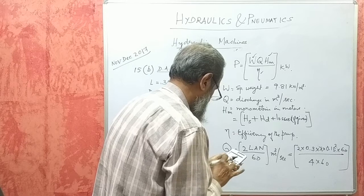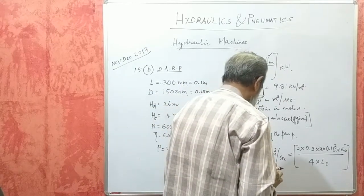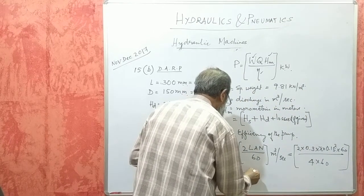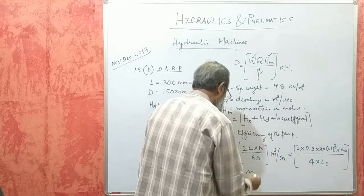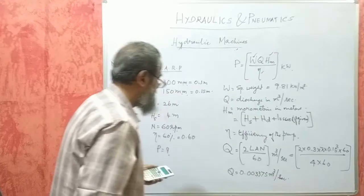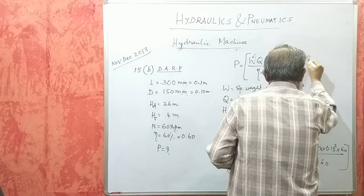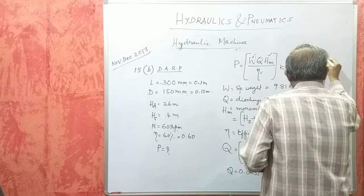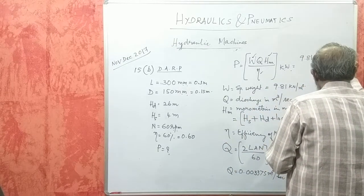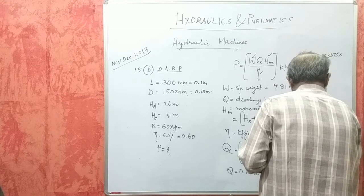Taking the calculator: 2 × 0.3 × (0.15)² × π / 4 × 60, divided by 60, gives a discharge of 0.003375 cubic meters per second.